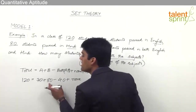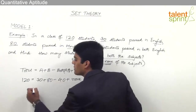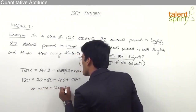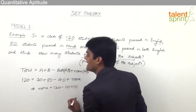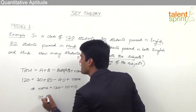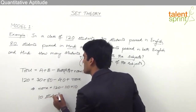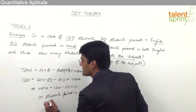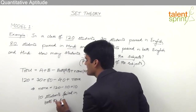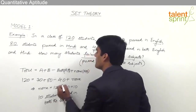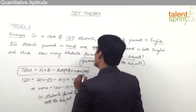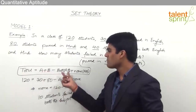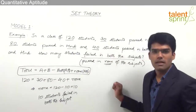70 plus 80 is 150, minus 40 is 110. So none equals 120 minus 110, which is equal to 10. We can say that 10 students have failed in both subjects. Simply with the application of this formula — total equals A plus B minus both AB plus none of A and B — we can find whatever is required. Remember, A here is the complete set A and B is the complete set B, not only A or only B.